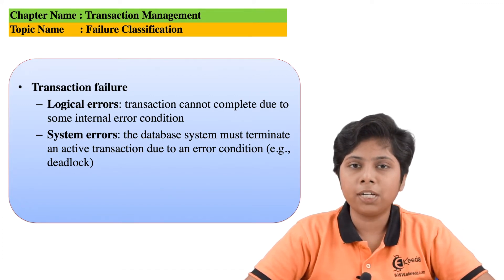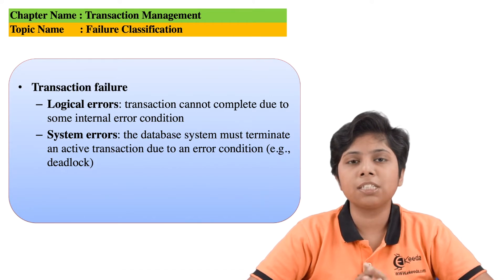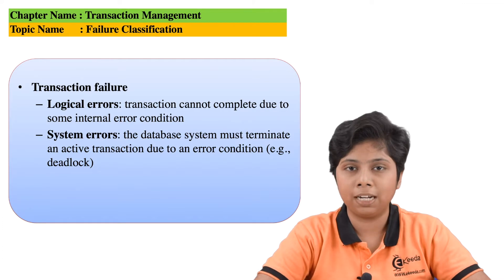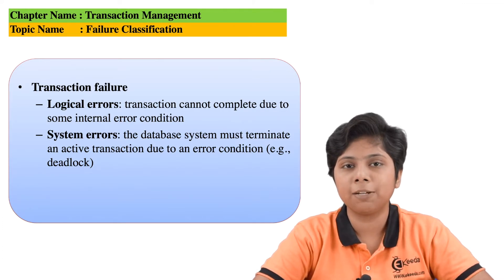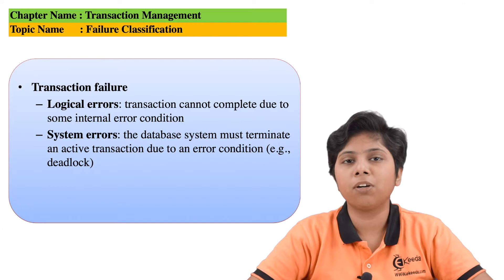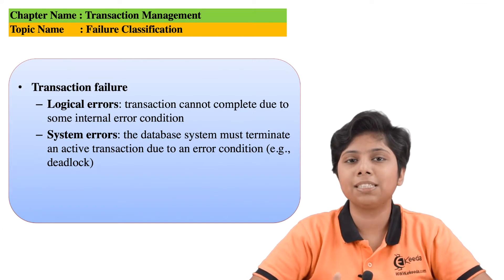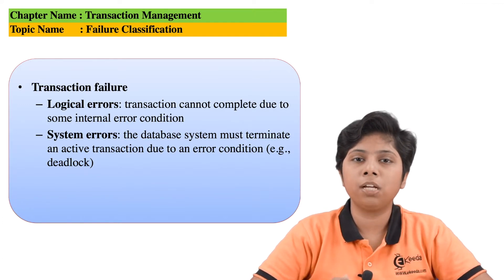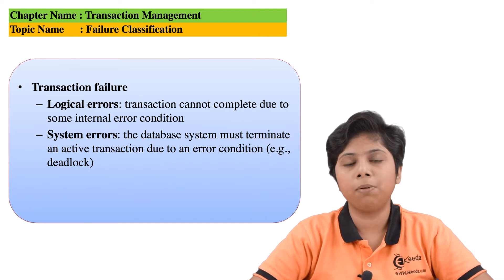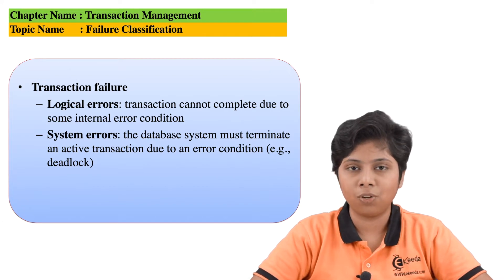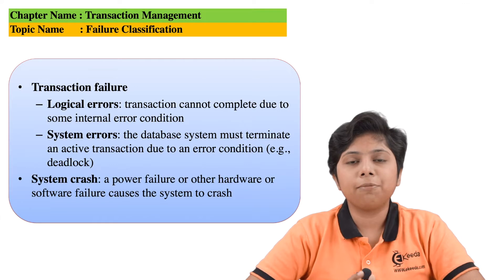If that type of problem results in a transaction failure, we say a logical error has occurred. The next is a system error. A system error occurs when there is some bug in the particular database software or operating system that causes the transaction to halt its execution. If the transaction is aborted for that reason, there is a system error. For a system error, the transaction can be re-executed at a later time when the problem is solved, but for a logical error we need to redefine the transaction so the logic is corrected.